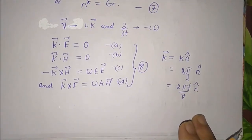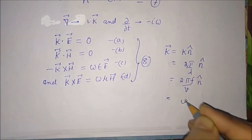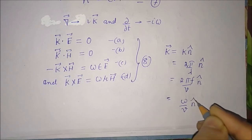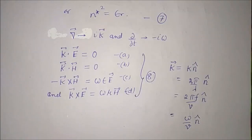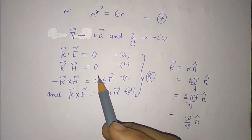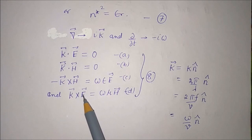Since f is the frequency and v is the velocity, k equals omega/v times n̂, where omega is the angular frequency. Equation 8 gives Maxwell's equations for electromagnetic waves traveling in an isotropic dielectric: k dot E equal to zero, k dot H equal to zero, minus k cross H equal to omega epsilon E, and k cross E equal to omega mu H.